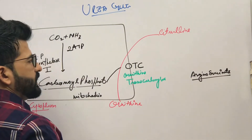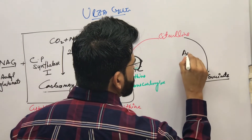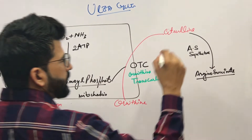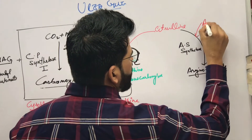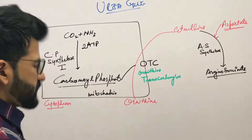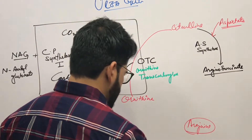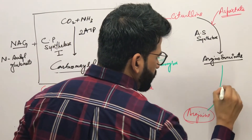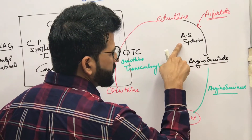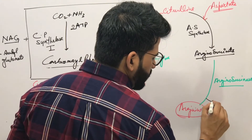Citrulline then converts into argininosuccinate, and the enzyme which helps it do so is argininosuccinate synthetase. This is where aspartate is added — aspartate provides the second NH2 group that will end up in urea.